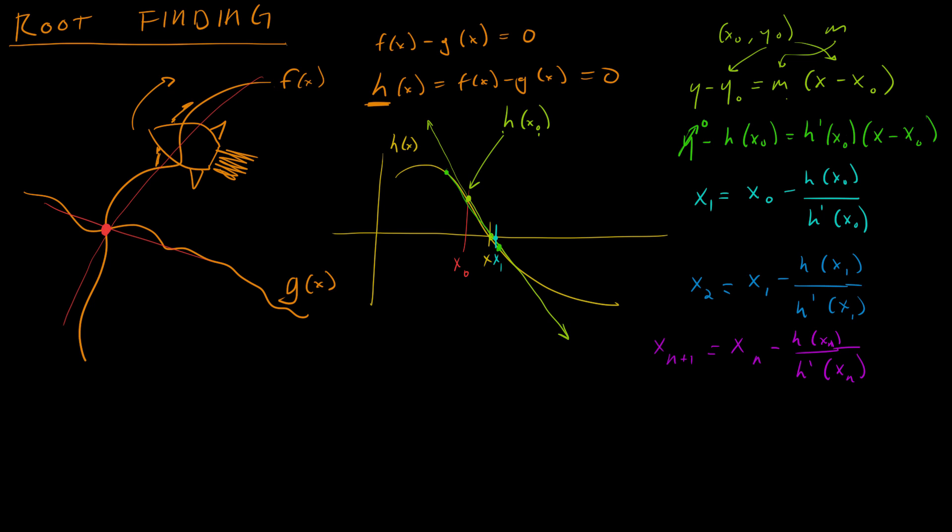If you zoom in to a very small space around the intersect of this function in the x-axis, then you can see the line looks almost straight at that point. And if it doesn't look straight, then keep zooming in and eventually it will look completely straight.